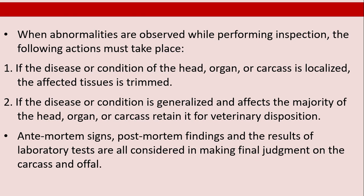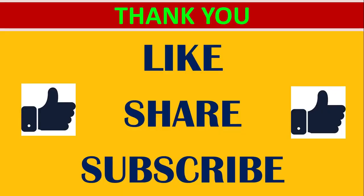When abnormalities are observed while performing inspection, the following actions must take place. First, if the disease or condition of the head, organ, or carcass is localized, the affected tissue is trimmed. Second, if the disease or condition is generalized and affects the majority of the head, organ, or carcass, retain it for veterinary disposition. Anti-mortem signs, post-mortem findings, and the results of laboratory tests are all considered in making the final judgment on the carcass.